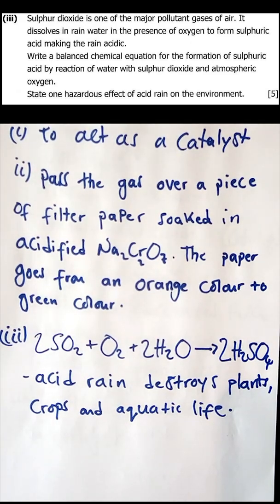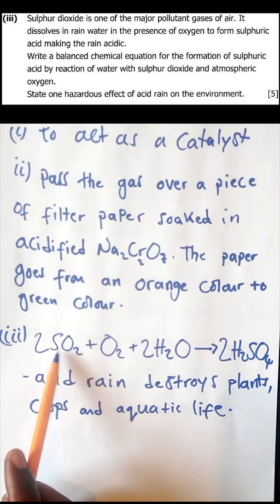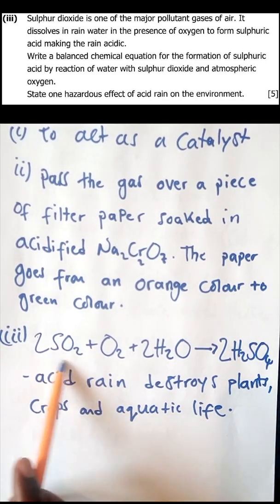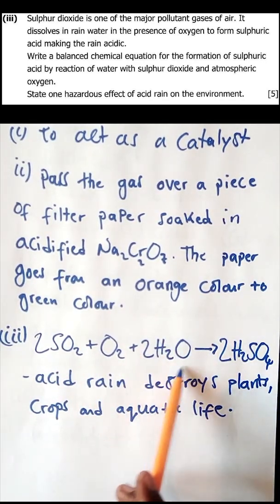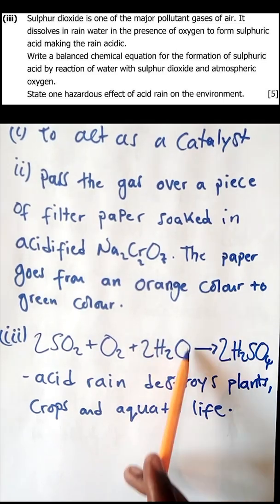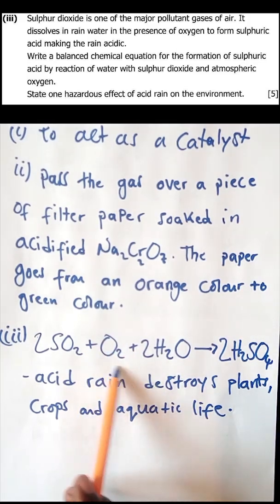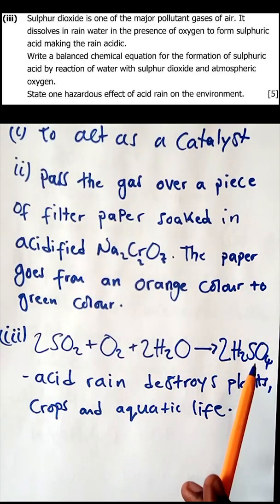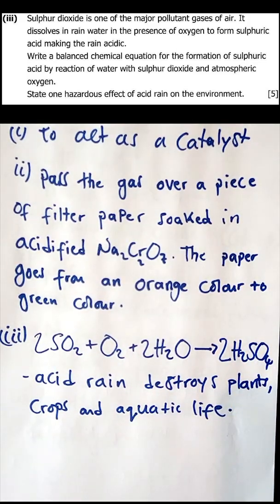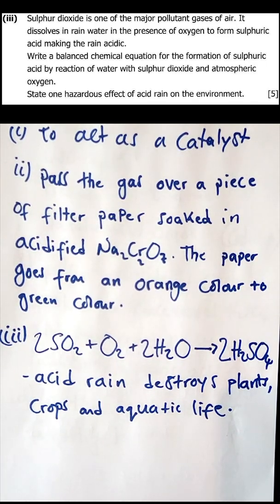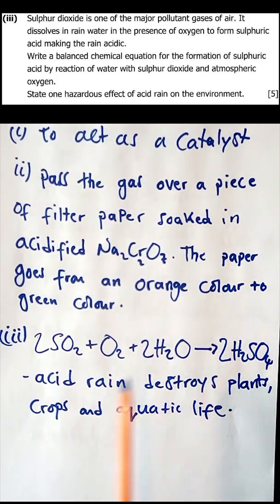This equation is quite tricky to balance. The balanced equation is: sulfur dioxide reacts with water, and in the presence of atmospheric oxygen, produces sulfuric acid. This is the key equation for sulfur dioxide gas reacting with water and oxygen to form sulfuric acid — remember it for your tests and exams.